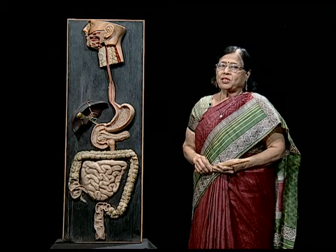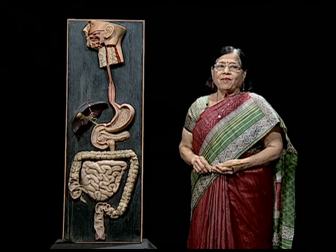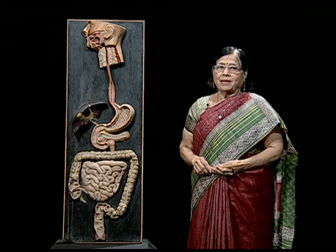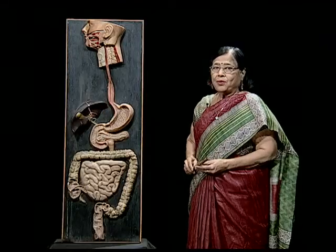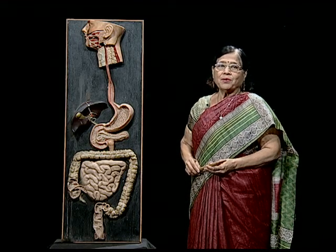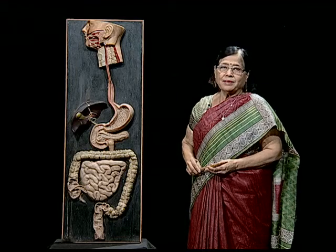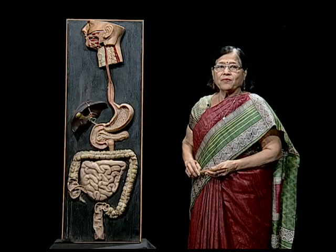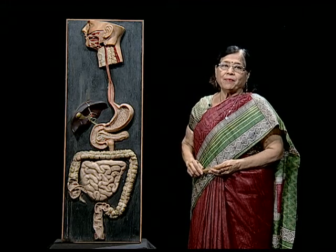We have reached the model showing different parts of the alimentary canal. By discussing this model, we will appreciate the way these organs are located in our body. We begin the alimentary canal with the mouth. You can see teeth and tongue inside the mouth — teeth help in mastication and tongue in rolling of food. You can also see salivary glands which secrete saliva, mixed with food to help in digestion. The process of digestion begins right in the mouth.